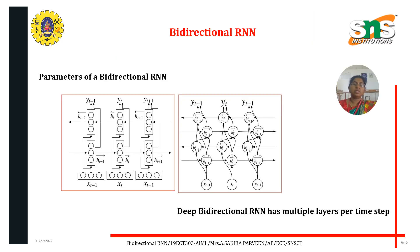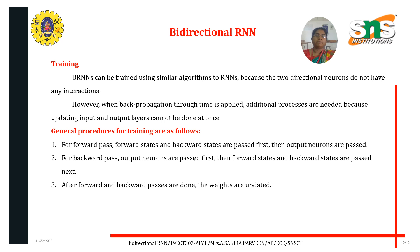These are the parameters of bi-directional RNN. For training the machine learning model, the general procedures are: a forward pass, a backward pass, and the steps to be performed after both passes.